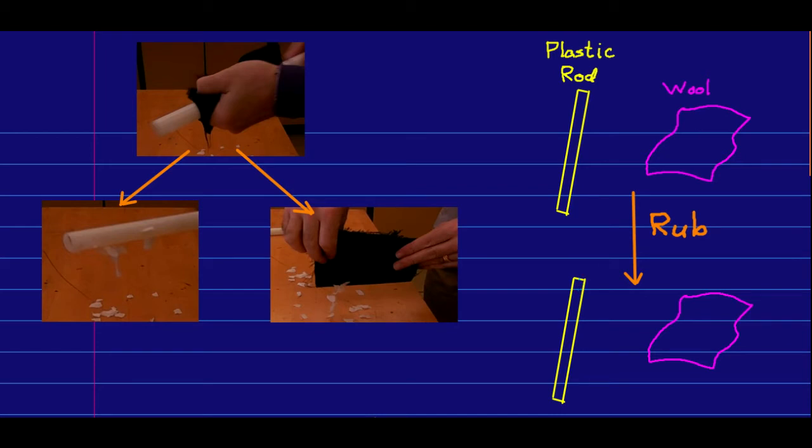So what the state of the system is after rubbing is that there's some amount of negative charge on the plastic rod and there's some equal amount of positive charge on the wool. And in this charge diagram, that's what we'll call this a charge diagram, I've been careful to draw equal amounts of charge.